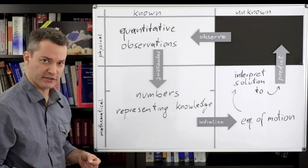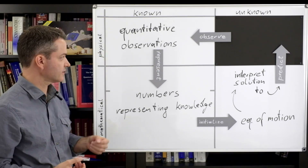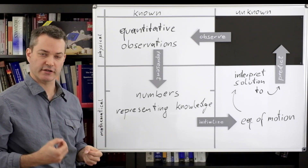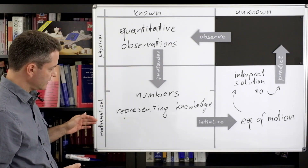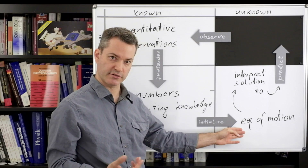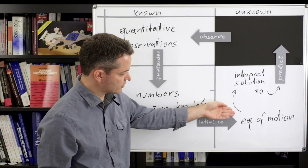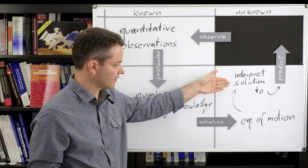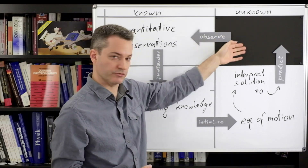Now that we have set the stage in general, I will let my slightly younger self explain the details. Physics is about the interpretation and prediction of quantitative observations. All of our physical knowledge is ultimately based on observations that can be interpreted as measuring numerical quantities. The knowledge we gain is therefore represented mathematically by numbers. We can plug these numbers as initial conditions into equations of motion, which encode how the physical quantities will change with time. Once we have solved the equations of motion, we can interpret the solution to make predictions about future observations of unknown physical quantities.